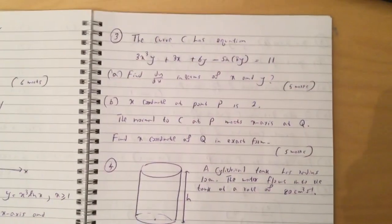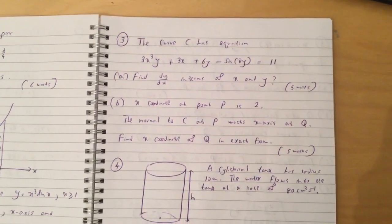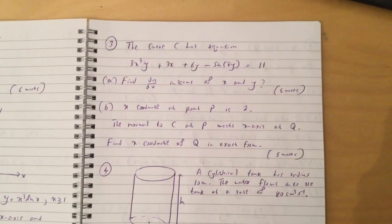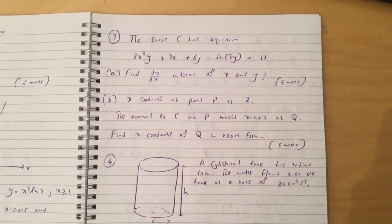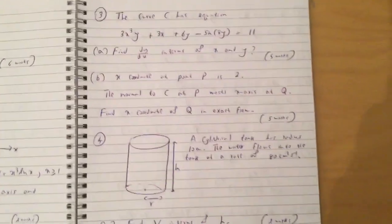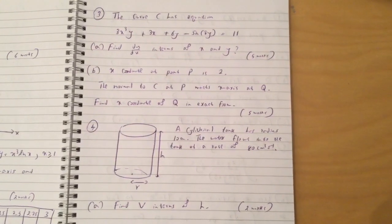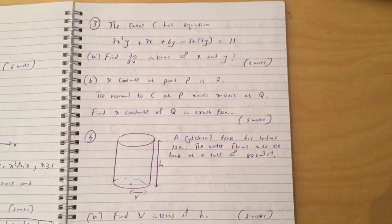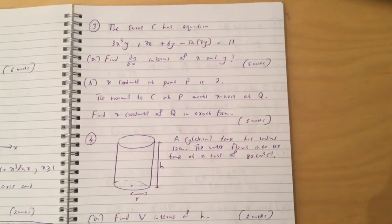Question 3: The curve C has equation 3x cubed y plus 3x plus 6y minus sine pi y equals 11. Find dy dx in terms of x and y. X coordinate at P is 2. The normal to C at P meets x axis at Q. Find x coordinate of Q in exact form.